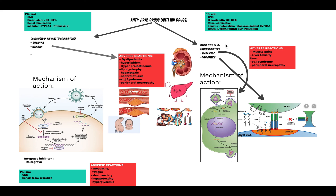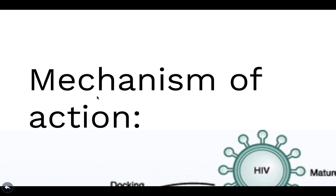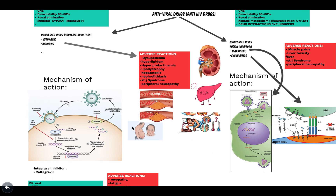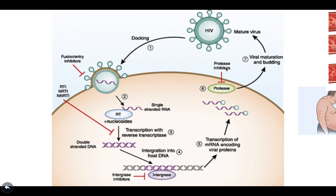Continuing with anti-HIV drugs from part one, we're now looking at protease inhibitors, fusion inhibitors, and integrase inhibitors. Protease inhibitors work by blocking the enzyme protease. While NRTIs and NNRTIs block reverse transcriptase, and fusion inhibitors block entry of the viral RNA into the host cell, protease inhibitors prevent the viral DNA from maturing into a virus by blocking the protease enzyme.